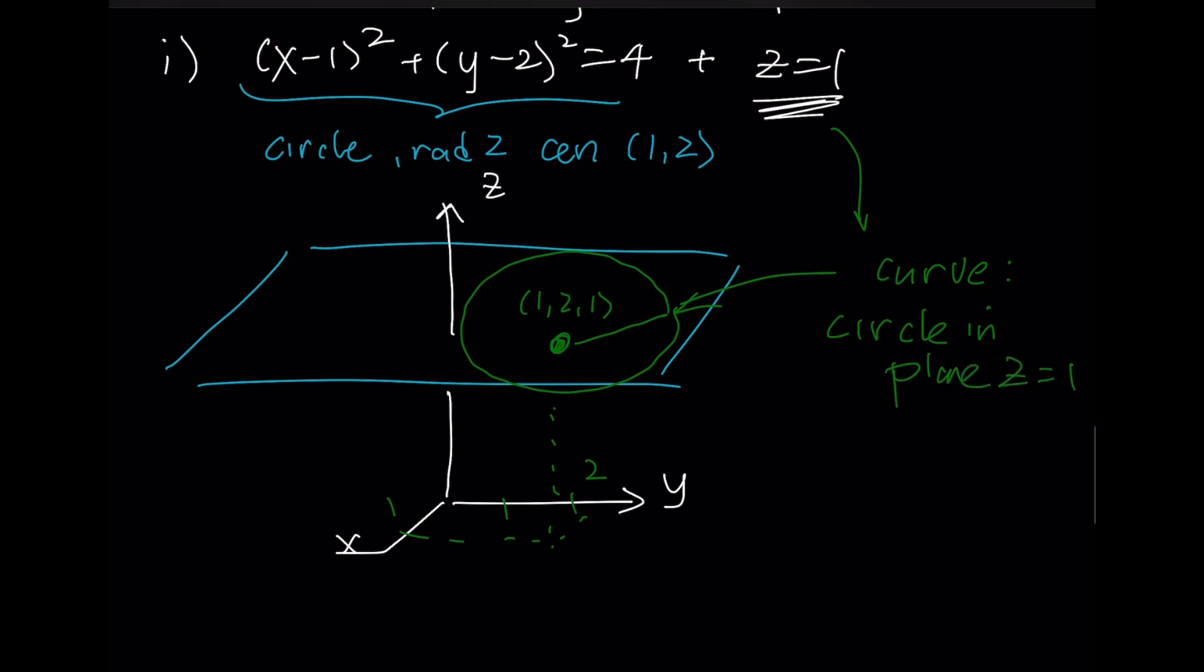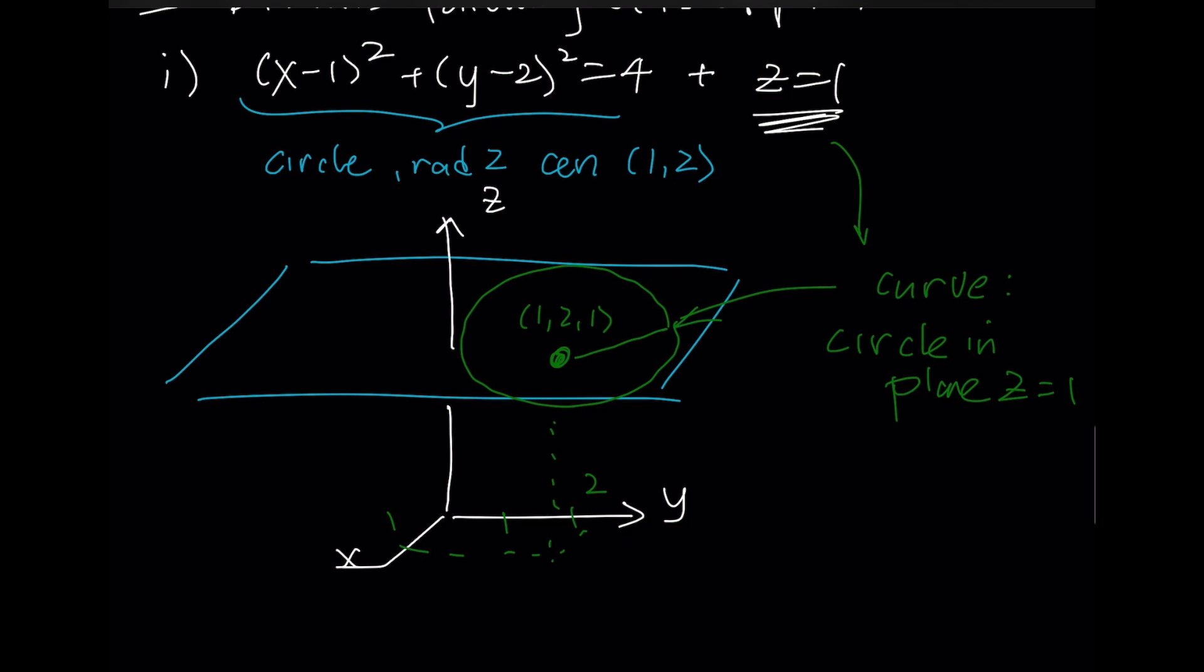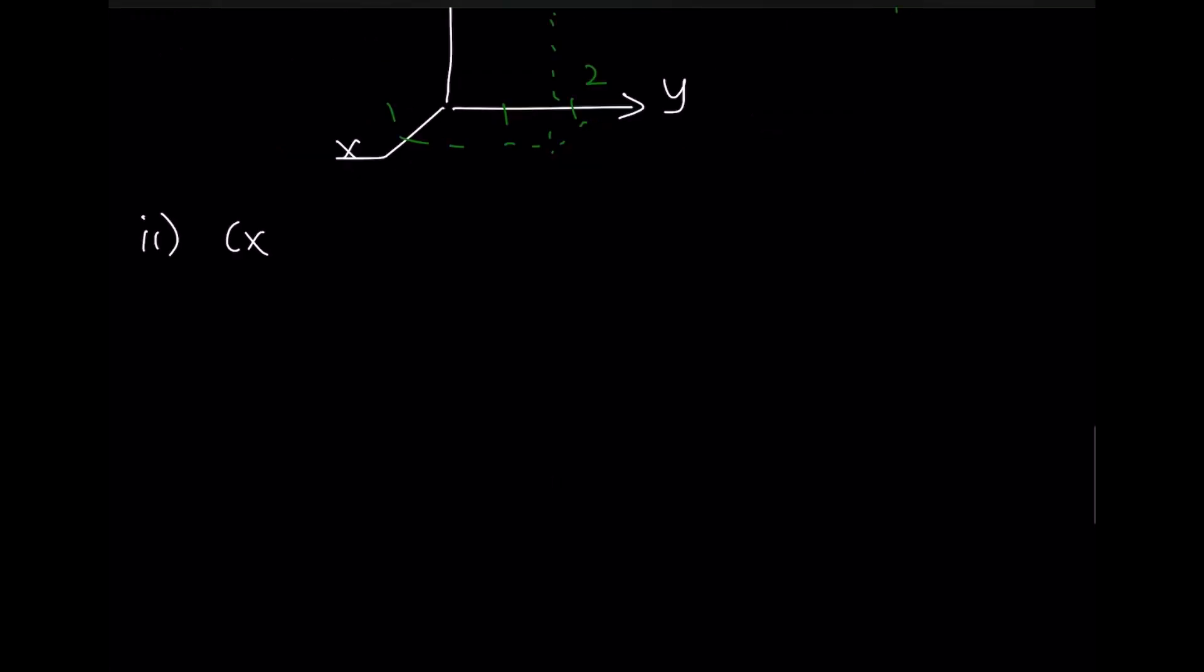I can go further. Here, we've put a condition on all three variables, x, y, and z. So if I were just to write x minus 1 squared, y minus 2 squared is equal to 4, and I want to talk about this in R3, that means I have no info about z. That means this z is free.